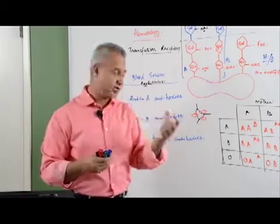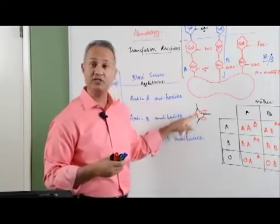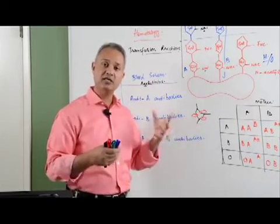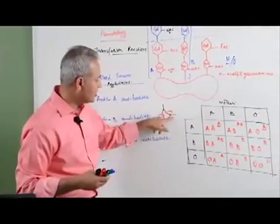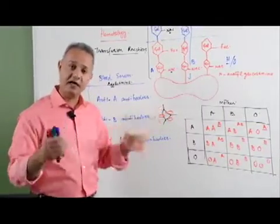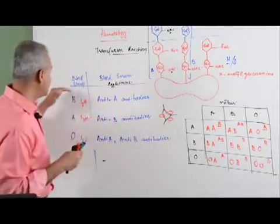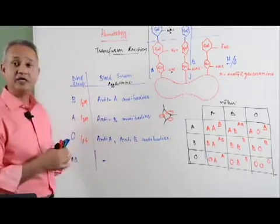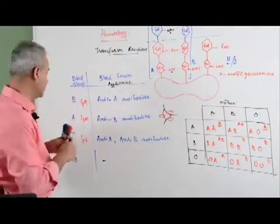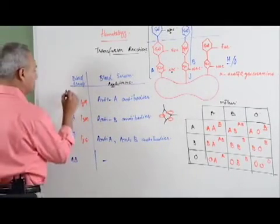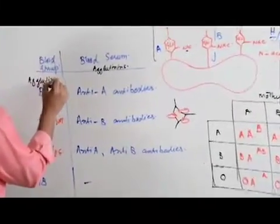Clumping up of the red blood cells due to the antibodies binding to the antigens on the surface is called agglutination. Of course, these antibodies are called agglutinins because they cause the agglutination and the antigens are called aglutinogens.